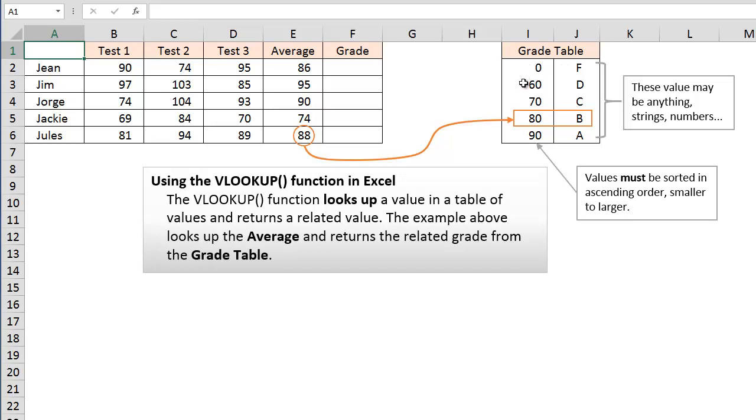0 is F, 60 to 69 is a D, 70 to 79 is a C, 80 to 89 is a B, and 90 or above would be an A.